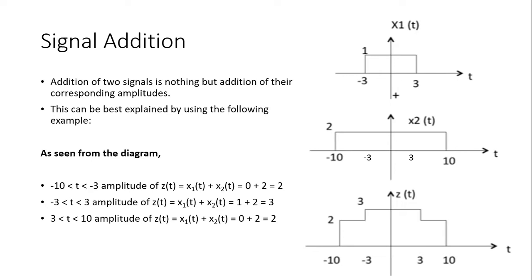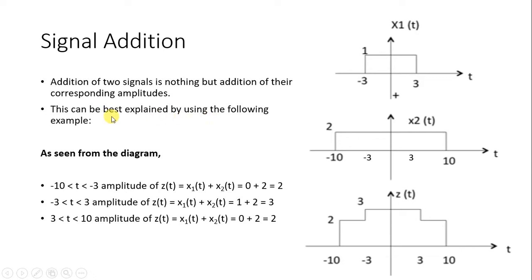The name suggests we are adding two signals together — for example, adding x1(t) to x2(t). The addition of two signals is nothing but the addition of their corresponding amplitudes. It means in this signal addition operation we are just adding the magnitudes of two signals. For example, if one has a magnitude of 1 and the other has a magnitude of 1, by taking care of its location we add their magnitudes to get the resultant output. This can be best explained by the following example.